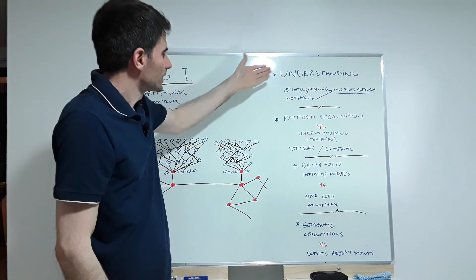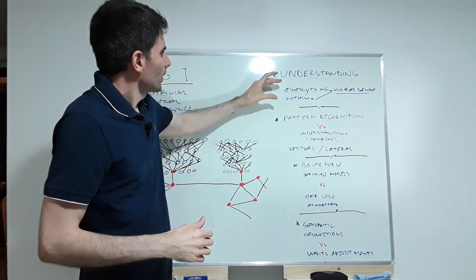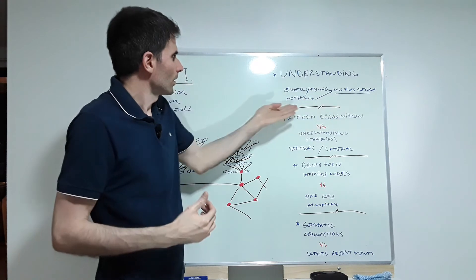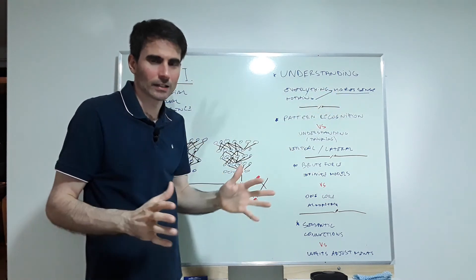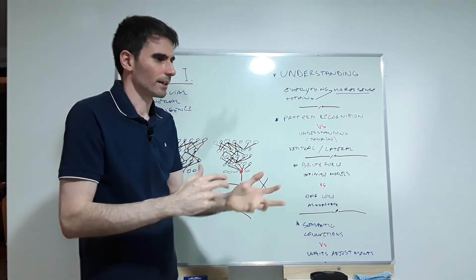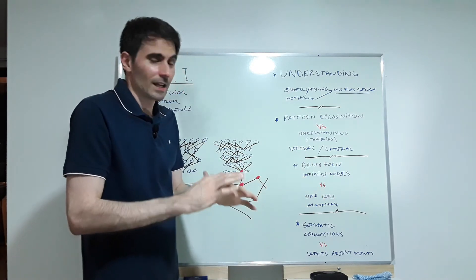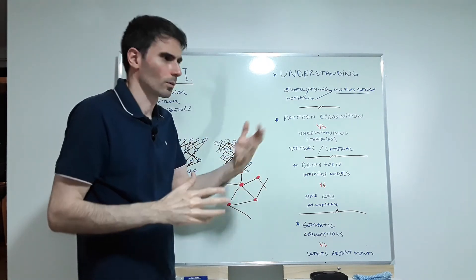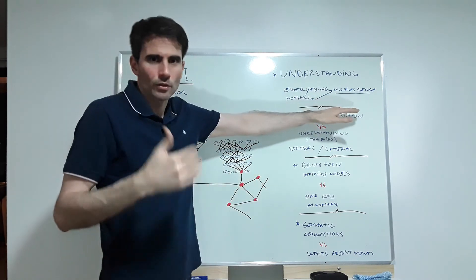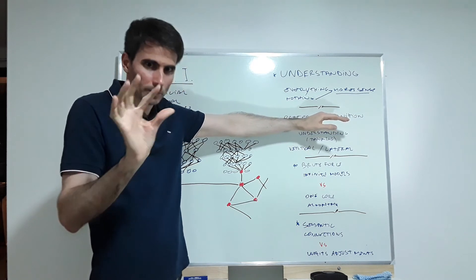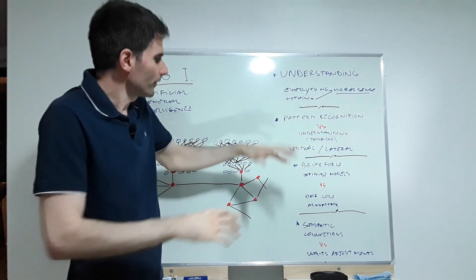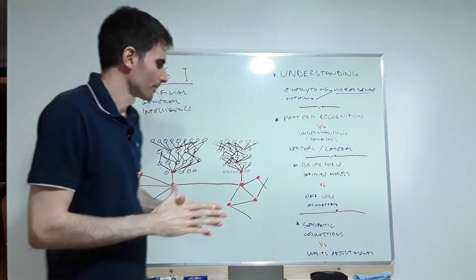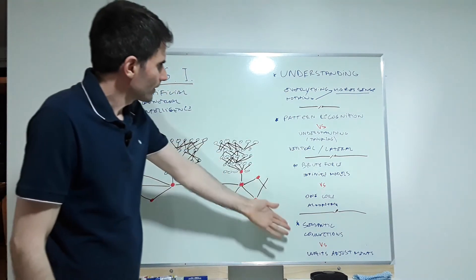We need understanding. In a system like the brain — or a computer — either everything makes sense or nothing does. It's clear-cut. It's not 'we partially understand things' with machine learning and neural nets. If things made sense, models wouldn't break down every time you change a tiny detail. Nothing makes sense for a neural net except at the pattern recognition level. In the brain, everything makes sense — and once a core algorithm is found, everything will be interconnected semantically.